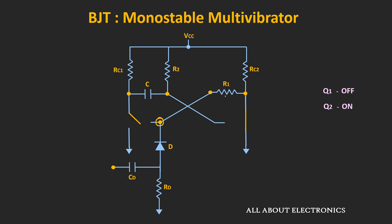At the collector of transistor Q2, we get the output. Initially after power-up, the voltage at the collector of Q2 is approximately 0V, while the voltage at the collector of Q1 is approximately Vcc. This is the stable state of the monostable — in this state, the output will be low.